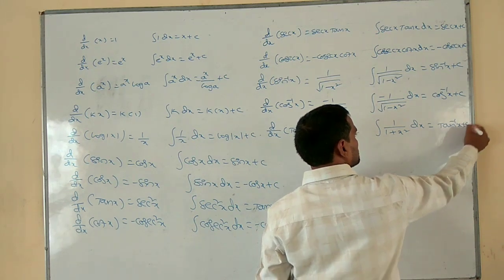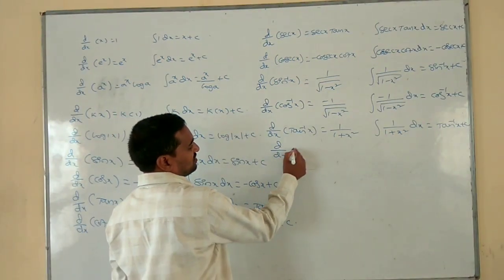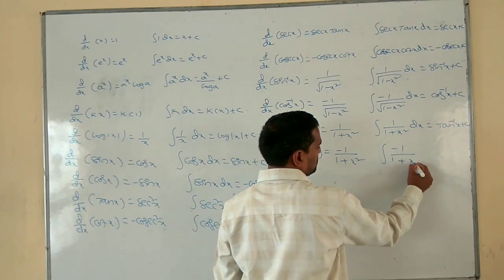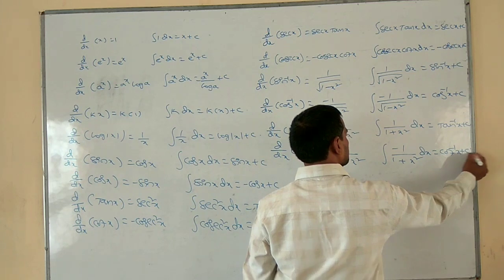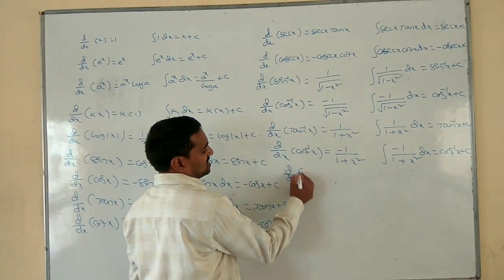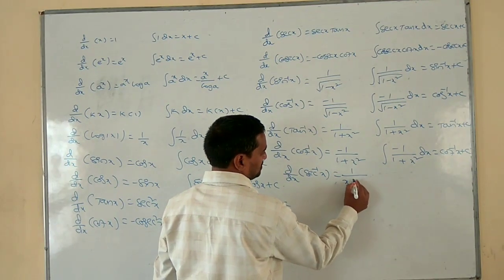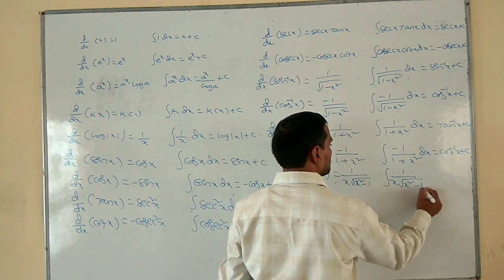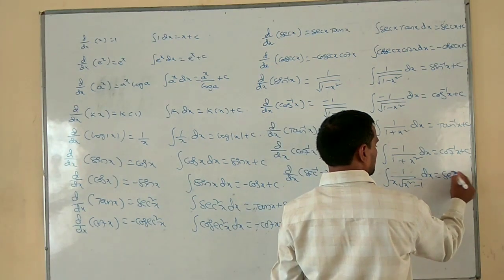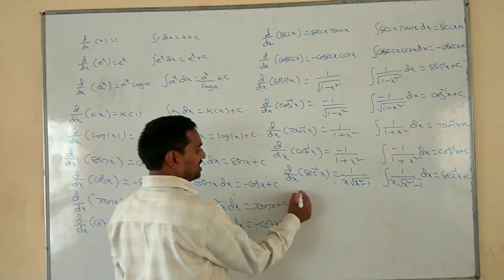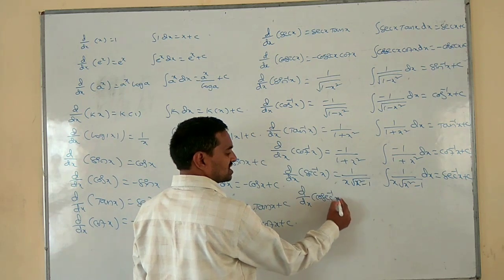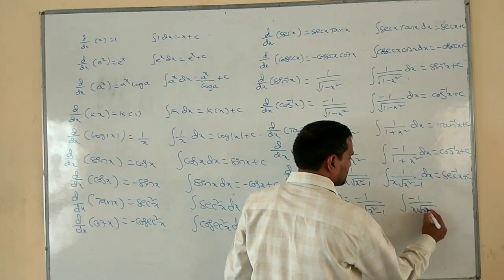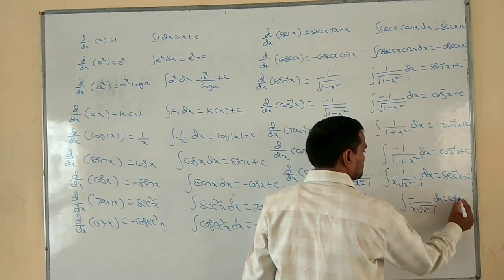Integral of 1 by 1 plus x square dx is tan inverse x plus c. d by dx of cot inverse x. d by dx of secant inverse x is 1 by x into root of x square minus 1. Integration of 1 by x into root of x square minus 1 dx is equal to secant inverse x plus c. Differentiation of cosecant inverse x is minus 1 by x into root of x square minus 1. Integration of minus 1 by x into root of x square minus 1 dx is equal to cosecant inverse x plus c.